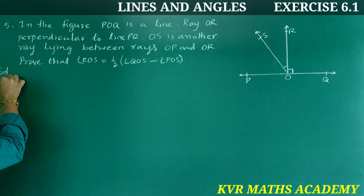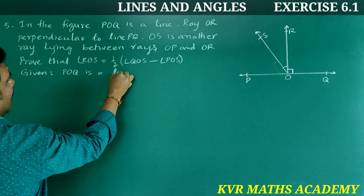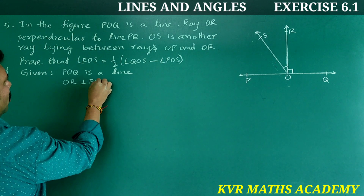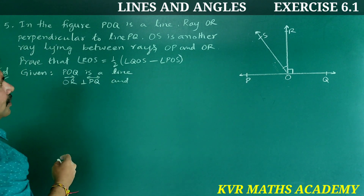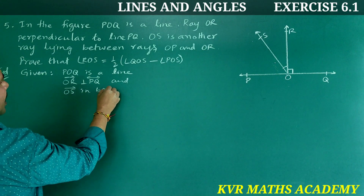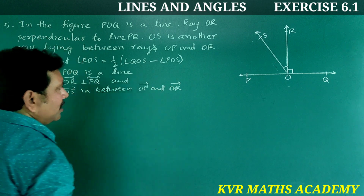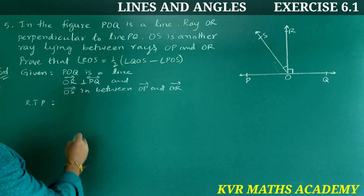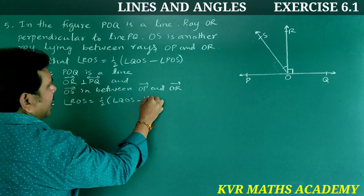Yes, let us do the solution. Given: POQ is a line. OR is perpendicular to PQ. OS ray lies between OP ray and OR ray. Required to prove: angle ROS is equal to half of angle QOS minus angle POS.